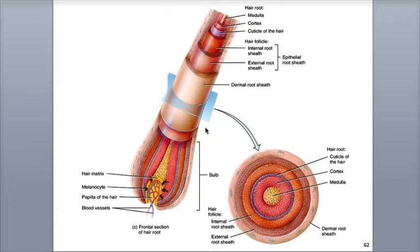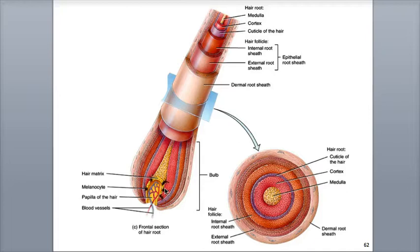The bulb is an onion-shaped structure at the base of each follicle. It contains the papilla of the hair, which is a nipple-shaped structure consisting of areolar connective tissue and blood vessels that contribute nutrients and oxygen to the growing hair follicle. The cells of the matrix are also located here in the bulb. The hair matrix originates from the stratum basale of the epidermis and grows existing hairs as well as generating new hairs to replace the old ones that are shed.